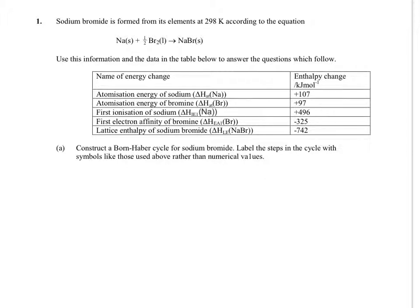So this first one, fairly straightforward, looking at the production of the synthesis of sodium bromide from its elements in their standard states. And it asks you to use the information and the data to answer the question as follows. Now the first one says to construct a Born-Haber cycle for sodium bromide, but it specifically says label the steps in the cycle with symbols like those used above rather than numerical values. So that means that's the explicit way in which this question wants it done. So it's worth always reading the question, and in this particular case, if you'd missed out that instruction, you might risk losing marks if you didn't do it in the way they asked you to.